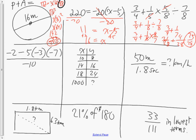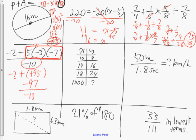Question four is an integer question. I have a subtraction expression where 5 times negative 3 is negative 15, and negative 15 times negative 7 is positive 95. So the bracket evaluates to positive 95. Using keep-flip-change I get a numerator of negative 97, then divide by negative 10. Dividing by 10 means moving the decimal, and a negative divided by a negative is positive, so the answer is 9.7.